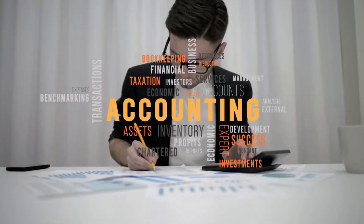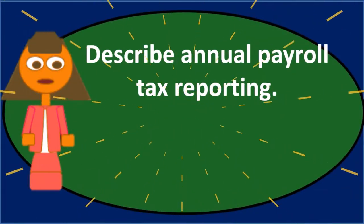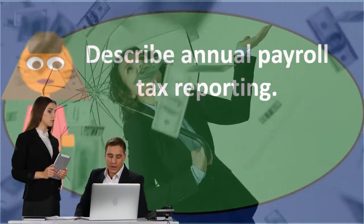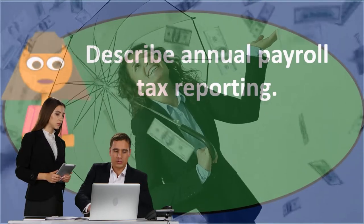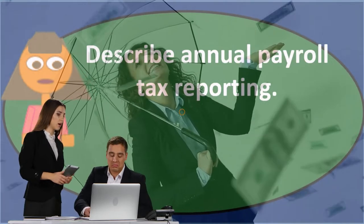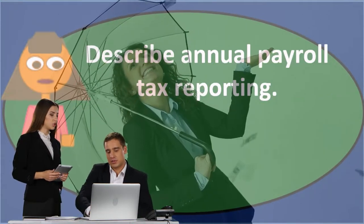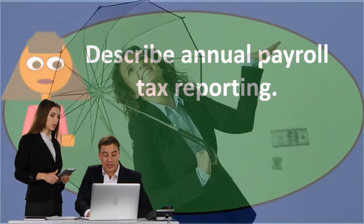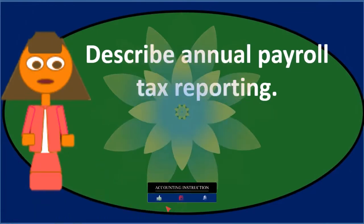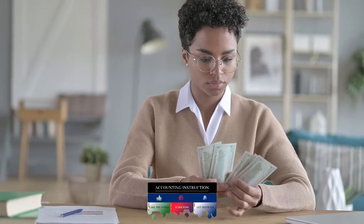Almost all employees will typically hit the FUTA cap at some point throughout the year. When we report at year end, the FUTA earnings will often be the number of employees times $7,000. The only reasons they would not be include if an employee was only employed for a few months and didn't reach $7,000 before termination, or if they were employed towards the end of the year like in December and didn't reach the cap.